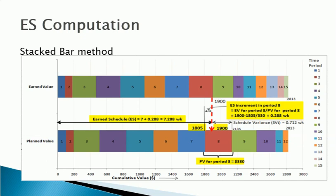The value of time-based schedule variance can be easily calculated as the number of the status period (8) minus the value of Earned Schedule (7.29). So, the time-based schedule variance is approximately 0.71 weeks.